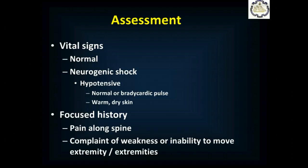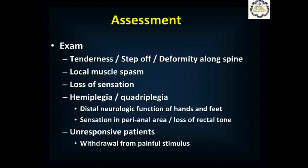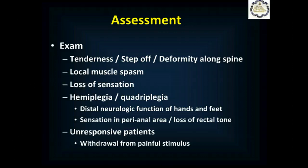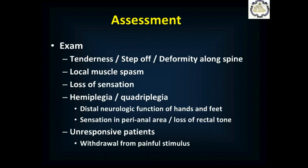In your focused history, ask if they're complaining of any pain along the spine and if they have any weakness or inability to move one or more extremities. On exam, check for tenderness along the spine, step-off (where you can feel the spine changing position relative to adjacent structures), deformity, local muscle spasm, loss of sensation, and loss of motor function. Also check for loss of rectal tone and sensation around the rectum — the very lowest spinal nerves provide sensation and tone there. In an unresponsive patient, check whether they withdraw from painful stimuli or posture.